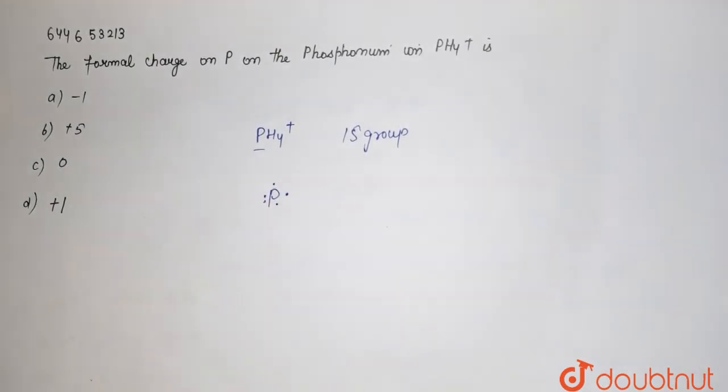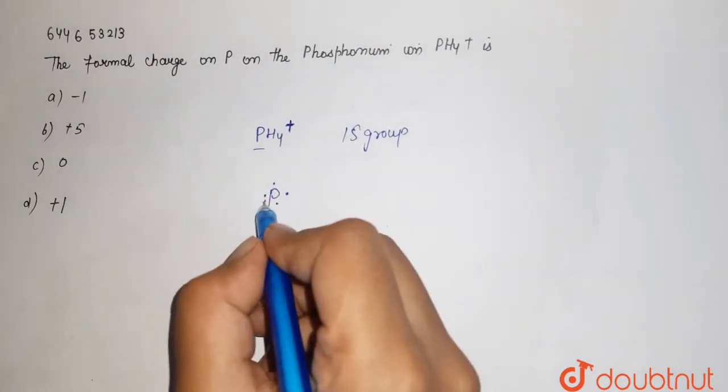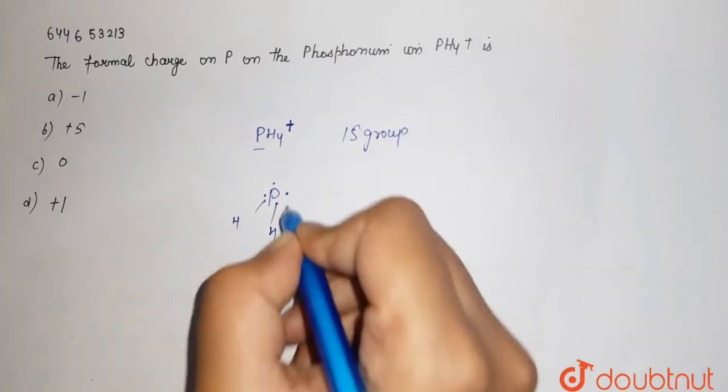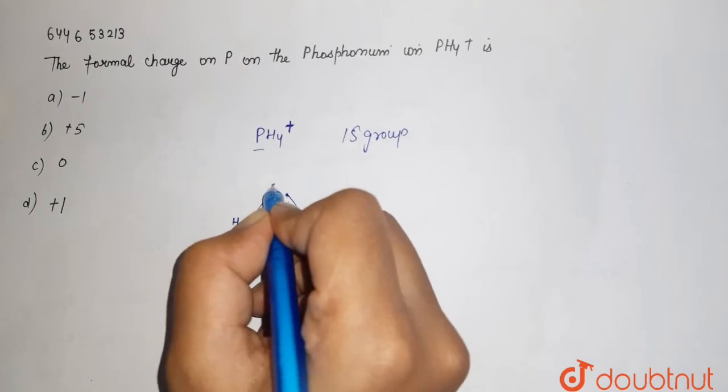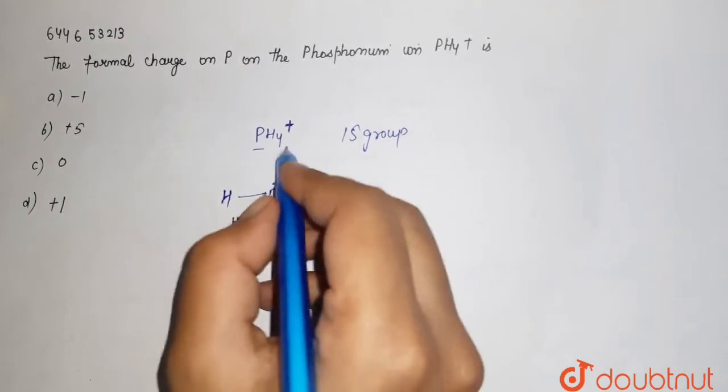Here this positive charge means it has lost 1 electron. So we can say that here its structure is 1, 2, 3, and 4 over here. So it has a total positive charge.